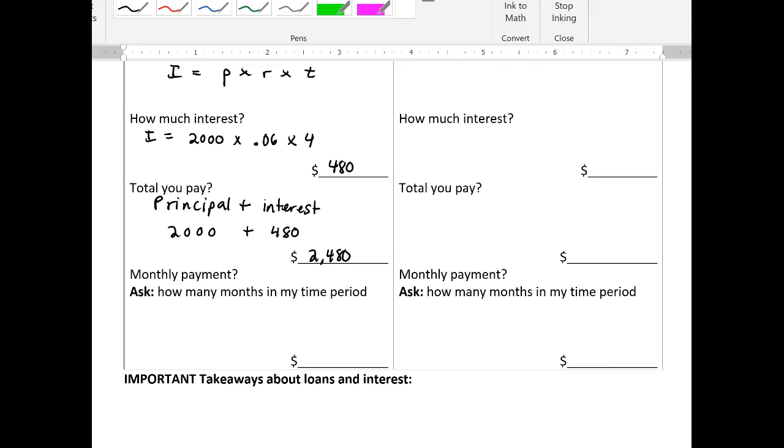So I borrowed $2,000 initially plus $480. That means for borrowing $2,000 over four years, I'm going to have to pay back the bank $2,480, right? So we're not going to just pay this all off once at the end, we'll probably pay it off in months. So what is our monthly payment? We ask how many months are in the time period. So we had four years. We know that there are 12 months in a year. So basically, we just say four times 12,